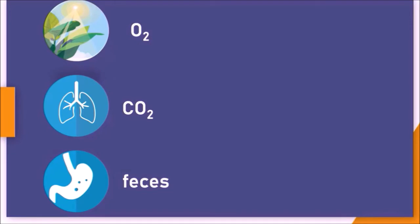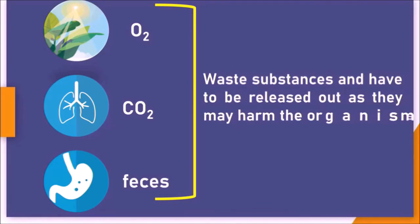So all these substances like oxygen, carbon dioxide, and feces—oxygen in the case of photosynthesis, carbon dioxide in the case of respiration, whereas feces in the case of digestion—are considered as waste substances and have to be released out as they may harm the organisms. These are just examples. There are several nitrogenous substances being formed by different metabolic activities in the body of a living organism.